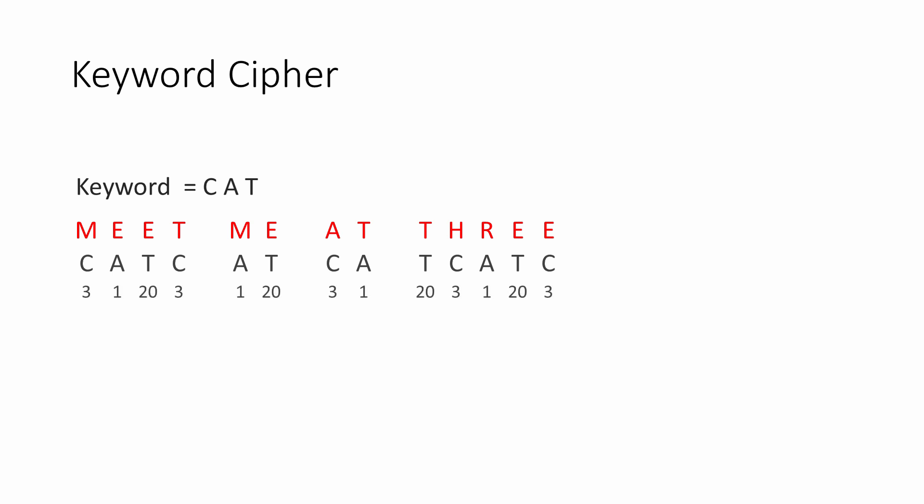Now write down the position in the alphabet of each letter in the keyword. In this example, C is position 3 in the alphabet, A is position 1, and T is position 20. Finally, you can use the Caesar Cipher for each letter, but this time with a key that isn't necessarily the same for each letter.